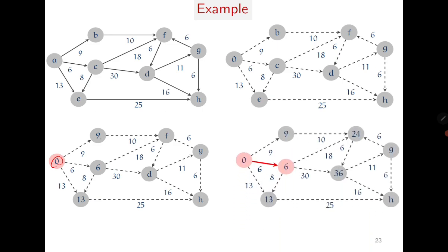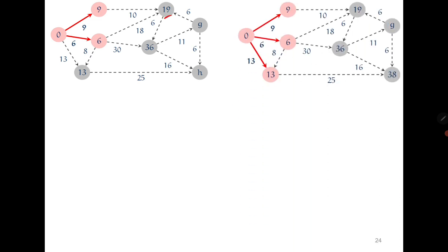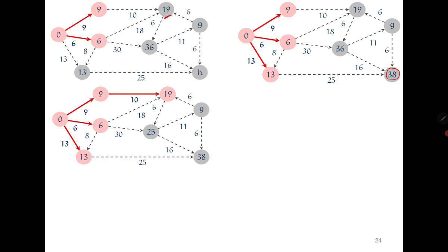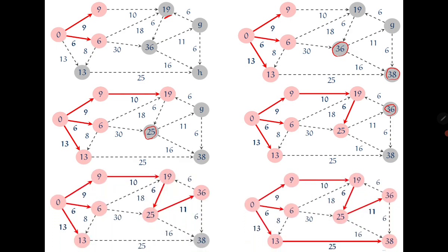The minimum is 6, so we go there first and update two neighbors to distances 24 and 36. Next minimum is 9, and from there a distance is updated to 19. Next is 13, which updates a vertex to 38. Then minimum is 19, updating a distance from 36 down to 25. Next minimum is 25, updating to 36. Then 36 is minimum, and finally 38.